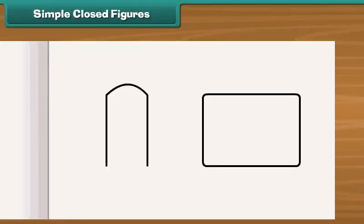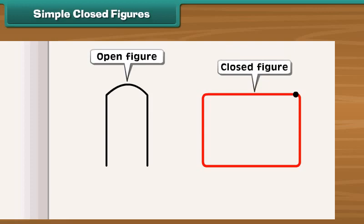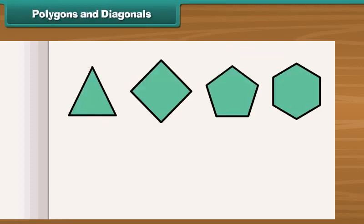Notice the given figures. First figure does not enclose part of plane. This is an open figure. This figure starts with one point and ends at different point. What about the second figure? This starts with one point and ends at the same point. Thus, it encloses region inside it. A figure of this type is called a closed figure.